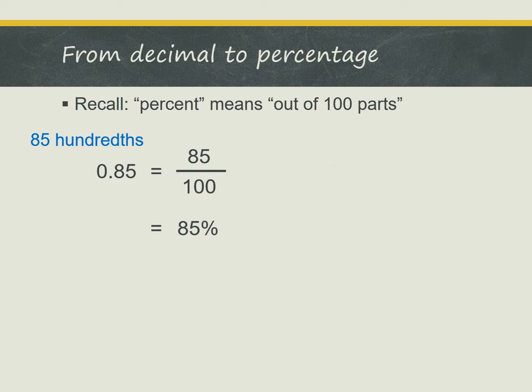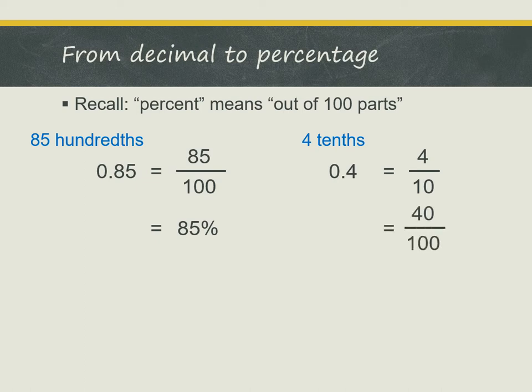Let's look at another example: 0.4. We can also express it as 4 tenths, and when we write it as a fraction, that's 4 out of 10. But remember, percent is out of 100 parts. So we need to convert this into an equivalent fraction with 100 in the denominator, and we get 40 out of 100. Then we can write it as a percentage: 40%.